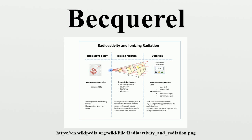Other names considered were Hertz, a special name already in use for the reciprocal second, and Fourier. The Hertz is now only used for periodic phenomena. Whereas 1 Hertz is 1 cycle per second, 1 Becquerel is 1 aperiodic radioactivity event per second.